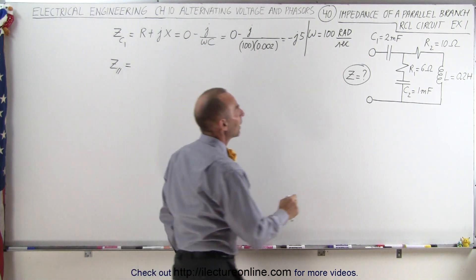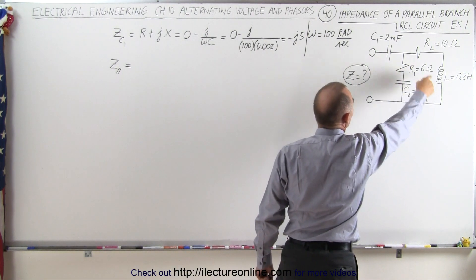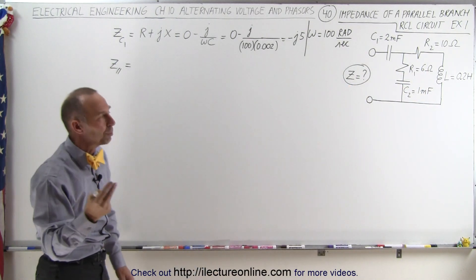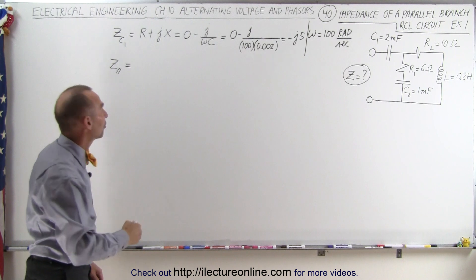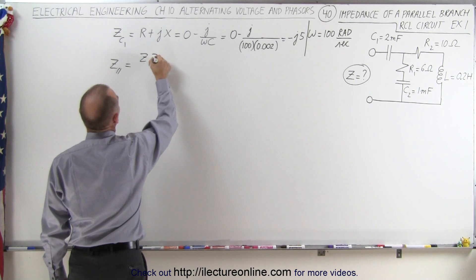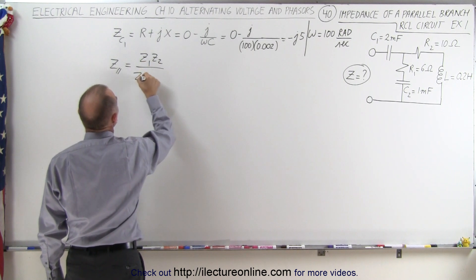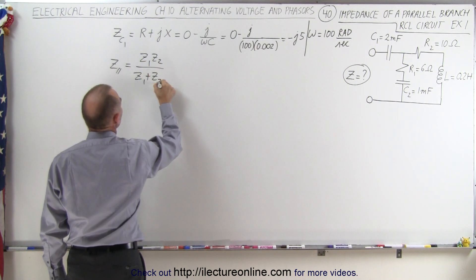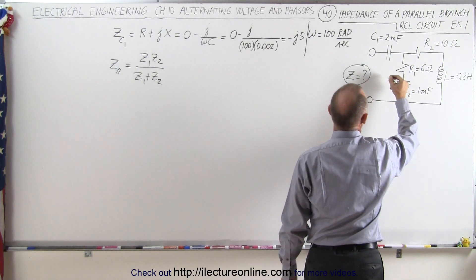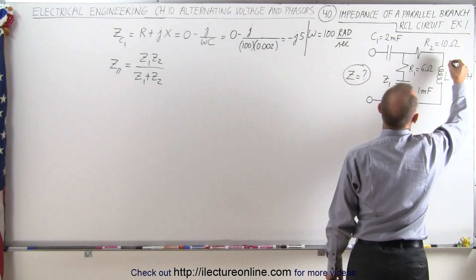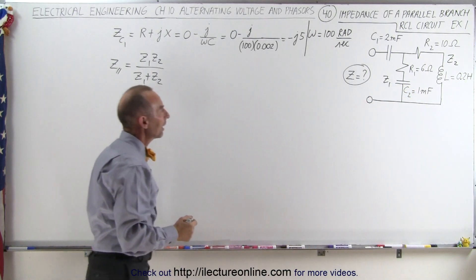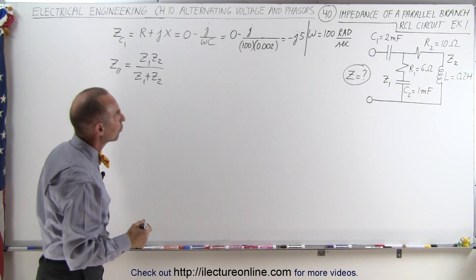Now we need to find the impedances across the two parallel branches. Since there are only two branches we can use the product over the sum formula: Z_parallel = Z1 × Z2 divided by Z1 plus Z2. Let's call the first branch Z1 and the second branch Z2, and go ahead and express the impedance of those two branches.